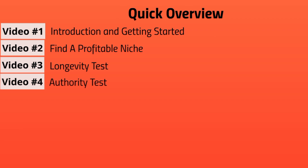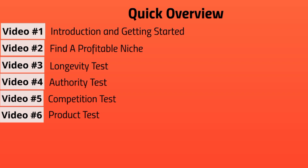Video four is the authority test — we'll ask questions to confirm you're truly the authority. Video five is the competition test, to make sure you have enough competition. Video six is the product test, to make sure everything will be profitable for you in the long run, because the worst case is jumping into a niche that has high demand but isn't actually profitable.